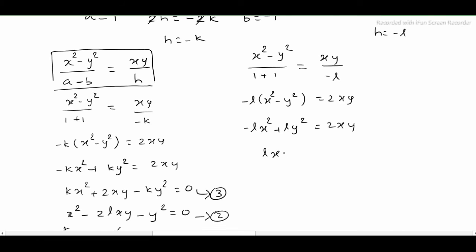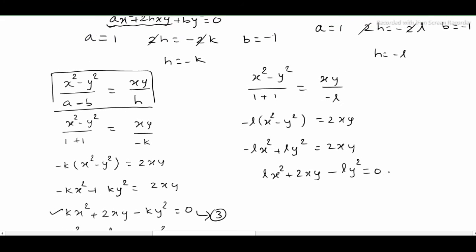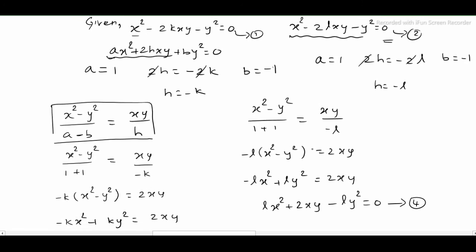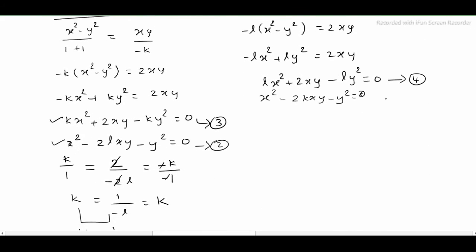Bringing all terms to one side, the angle bisector of equation 2 becomes x² - 2(1/l)xy - y² = 0. Comparing this with equation 1 (x² - 2kxy - y² = 0), we get -2k = -2/l, so k = 1/l, which gives kl = 1. With the sign, kl = -1.